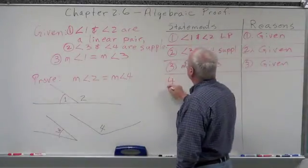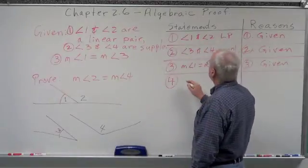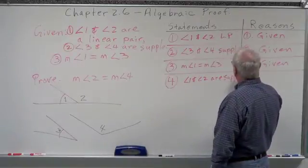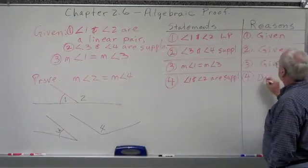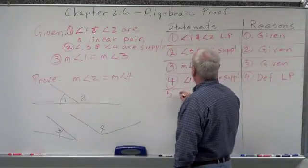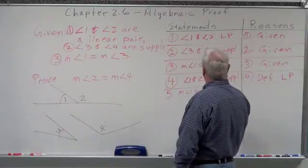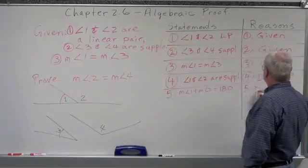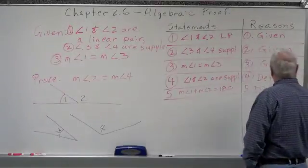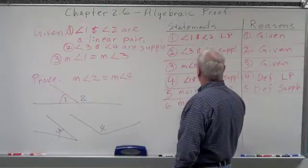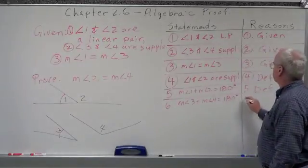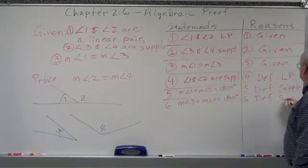Statement 4, taking it off our given: angle 1 and angle 2 are supplementary. Why? Definition of linear pair. Statement 5: measurement of angle 1 plus measurement of angle 2 equals 180. Reason: definition of supplementary. Statement 6: measurement of angle 3 plus measurement of angle 4 equals 180. Reason: definition of supplementary.